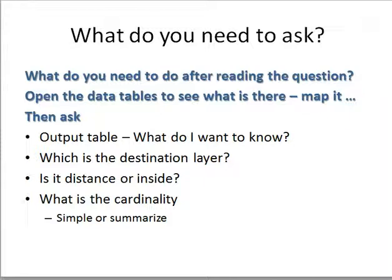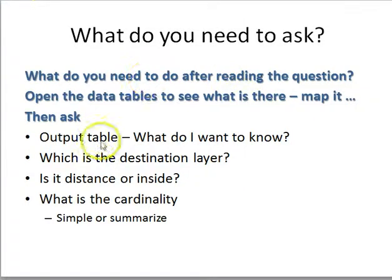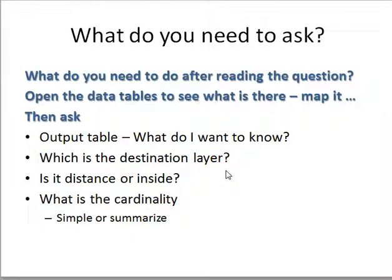The textbook walks through a helpful decision algorithm. First, open your attribute tables and look at the data — understand what you're working with. Think about what you want to map or what information you're looking for; that determines your destination. Then ask: do I want a count? A distance? Do I want to join the name of a soil type onto a school record? That's an inside join. If I just want something related to miles or distance, that's a distance join. Then decide: simple or summarized?